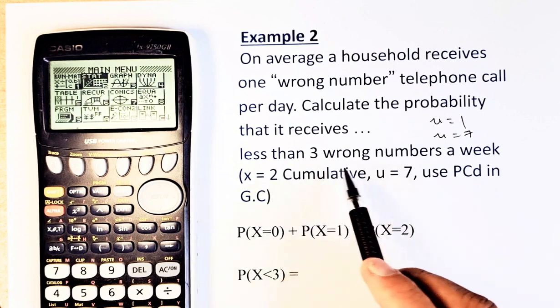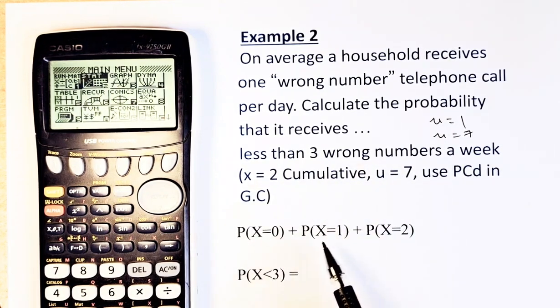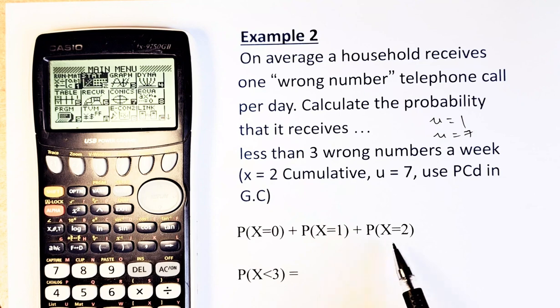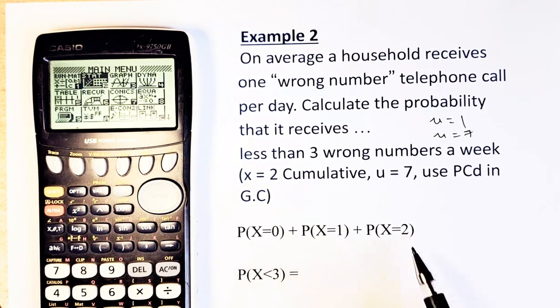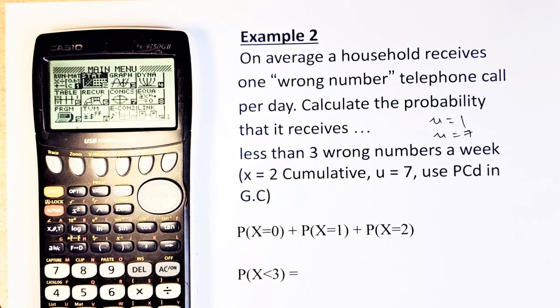Because they say less than three, you are calculating the probability of X = 0 plus X = 1 and plus X = 2. So you are accumulating from zero to two. So in this case, you are going to do PCD. PCD in your graphic calculator.